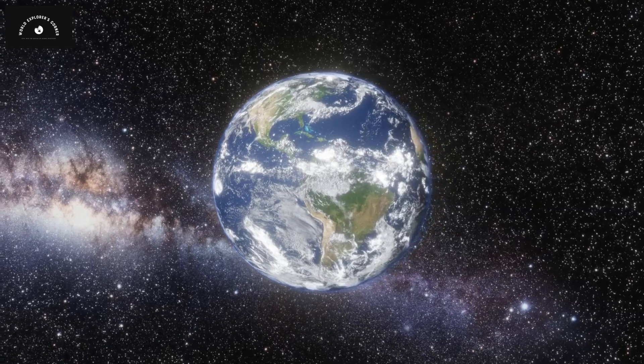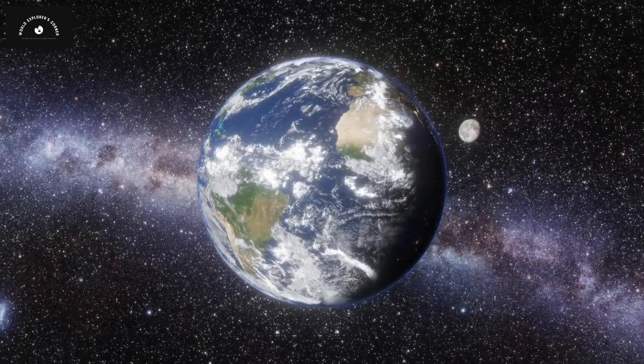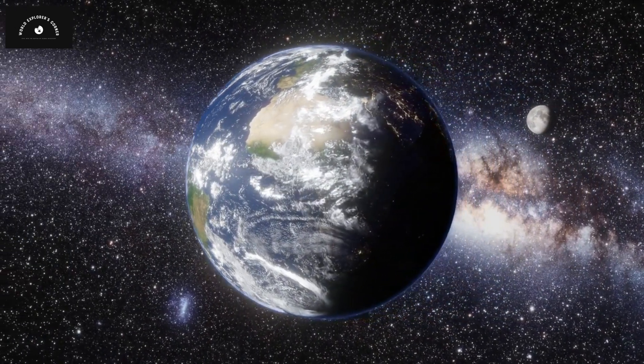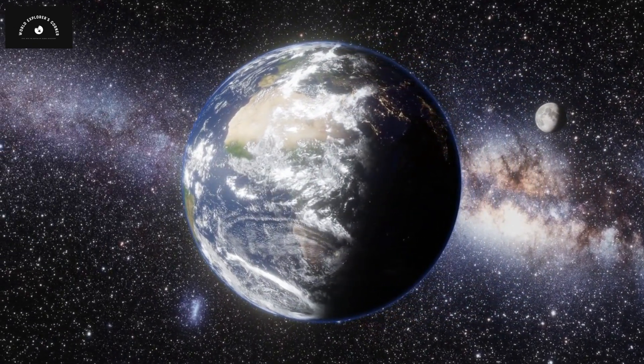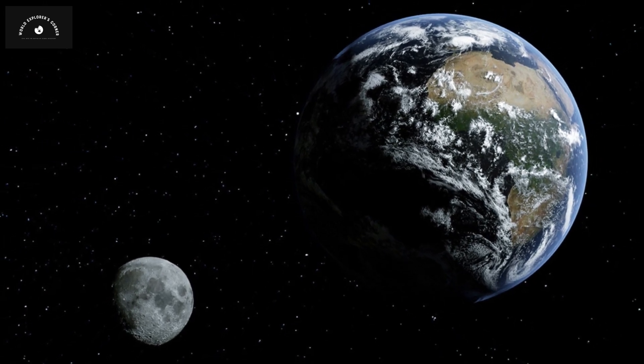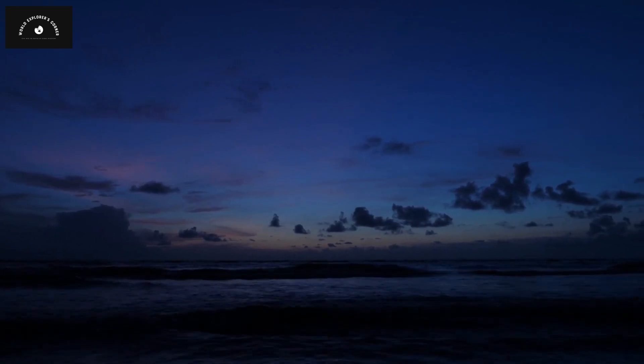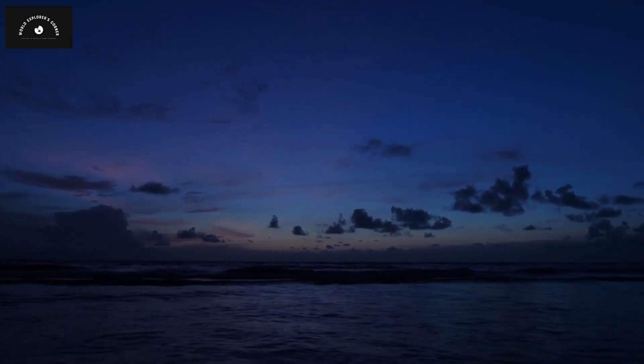Our moon also follows this law as it orbits around the earth. Despite the moon's much smaller size compared to earth, it still exerts some gravitational force. Although this force isn't strong enough to displace earth from its orbit, it does influence the ocean tides by attracting water, resulting in the formation of waves.